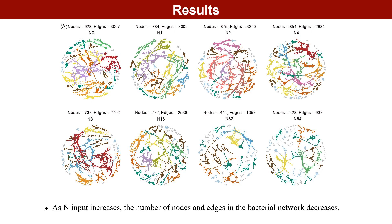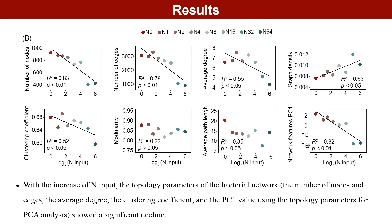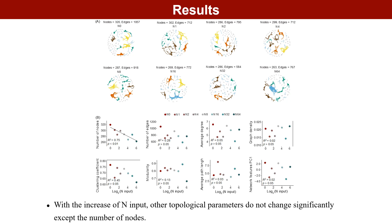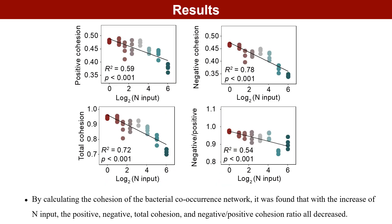We found that as nitrogen input increases, the number of nodes and edges in the bacterial network decreases. The topological parameters of the bacterial network showed a significant decrease, including the number of nodes and edges, average degree, clustering coefficient, and the PC1 value of PCA analysis using topological parameters. However, nitrogen input did not change the complexity of the soil fungal network. Further, by calculating the cohesion of the bacterial co-occurrence network, we found that as nitrogen input increased, positive, negative, total cohesion, and the negative-to-positive cohesion ratio all decreased. These reductions in bacterial network topological parameters and cohesion indicate that the bacterial network complexity is reduced.